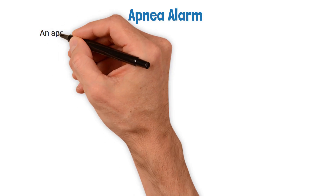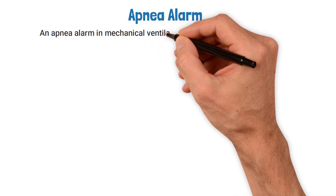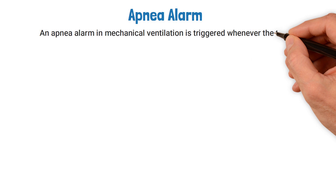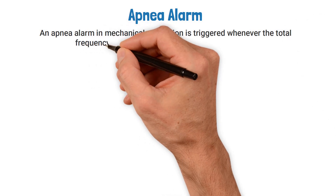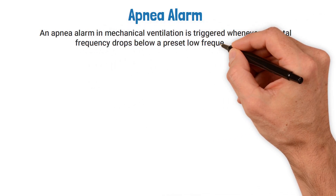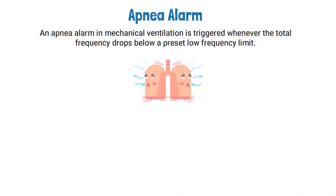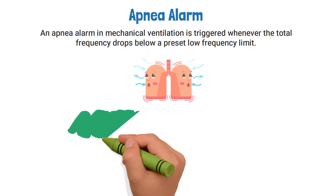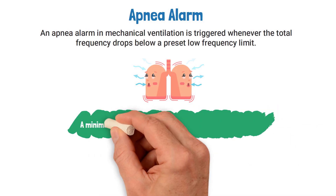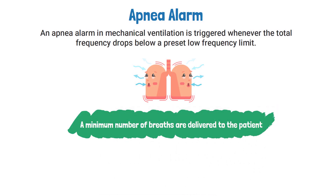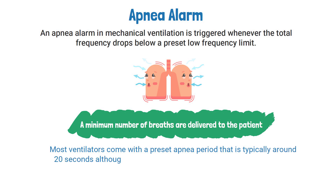An apnea alarm in mechanical ventilation is triggered whenever the total frequency drops below a preset low frequency limit. This is useful in ensuring that a minimum number of breaths are delivered to the patient. Most ventilators come with a preset apnea period that is typically around 20 seconds, although some allow the operator to adjust this time limit.